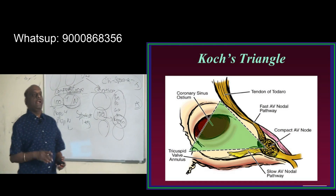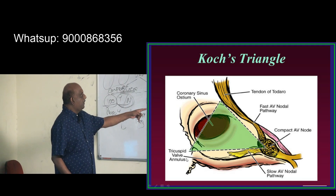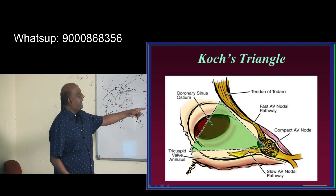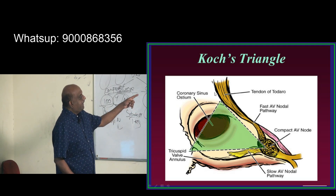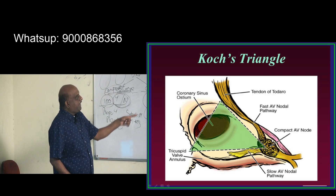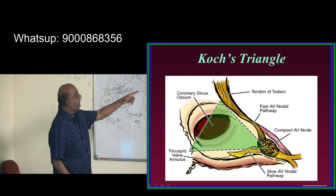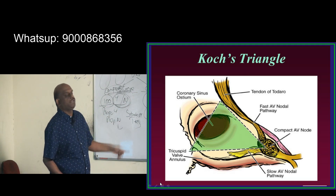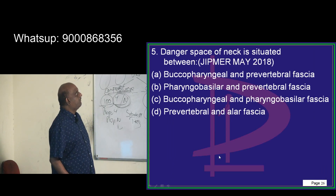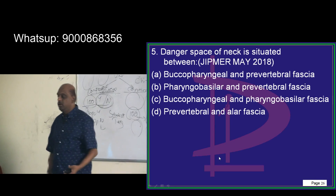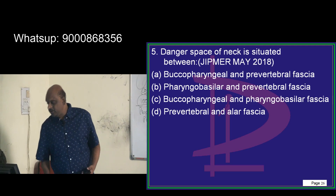To summarize: the Triangle of Koch has one border formed by the tricuspid valve annulus, another border by the Tendon of Todaro, and the coronary sinus ostium forms the base of the triangle. Don't forget these three components.